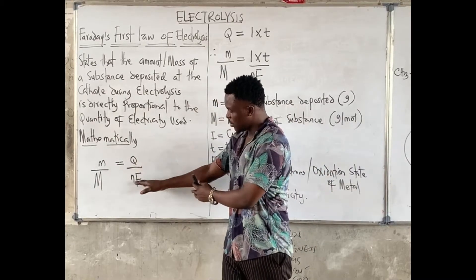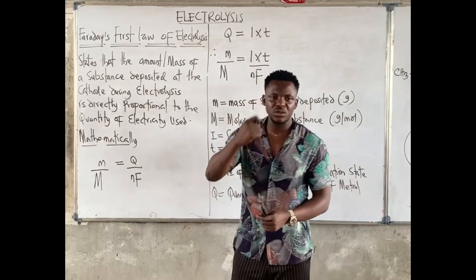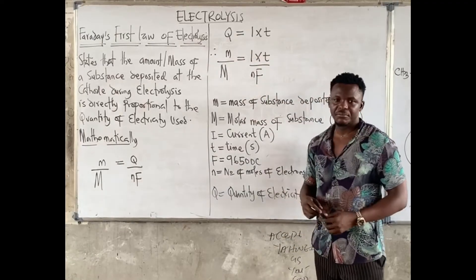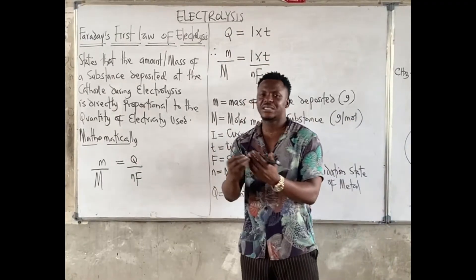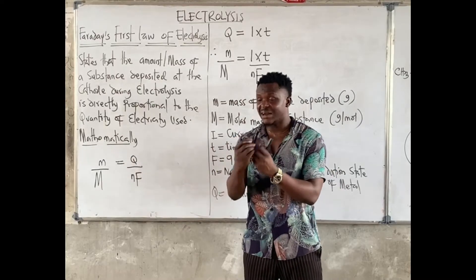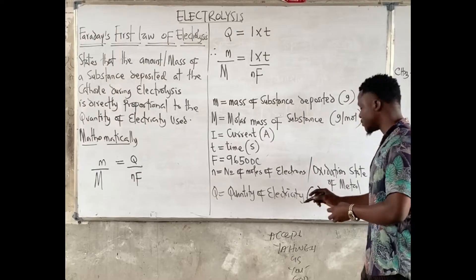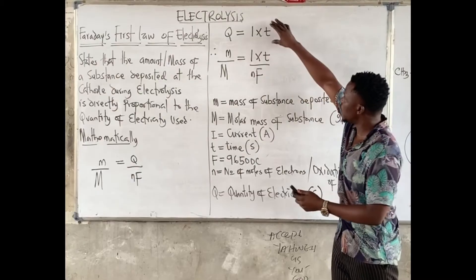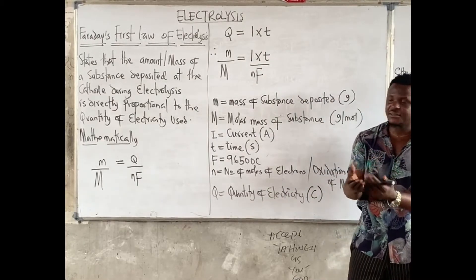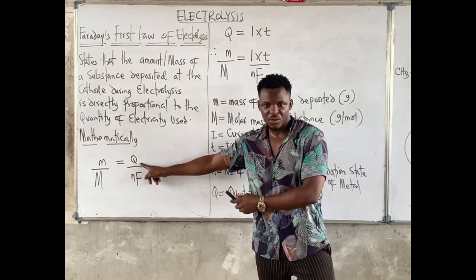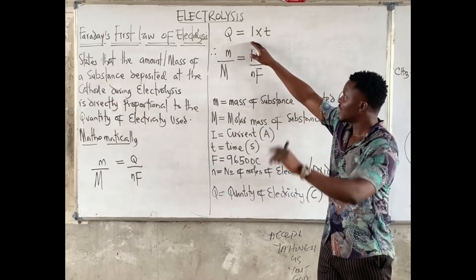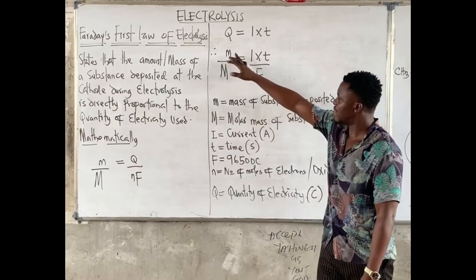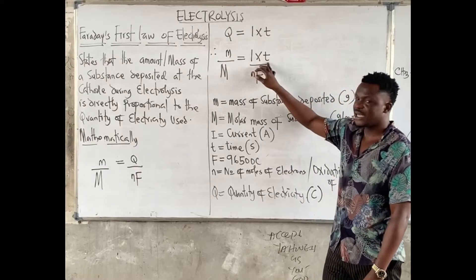Now this Q here is actually the quantity of electricity we are talking about. The Q is current times time. So why I gave all this formula like that? Most of the times, they can just give us quantity of electricity directly. The unit of quantity of electricity is always in coulombs. Or they can actually give us current and time. This is always the predominant one we are going to be seeing.